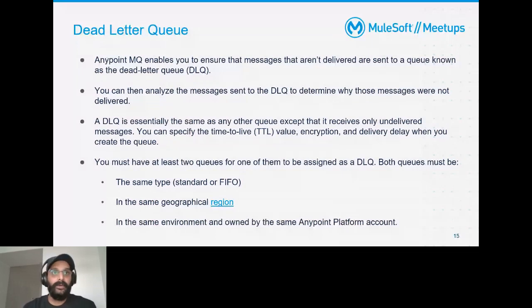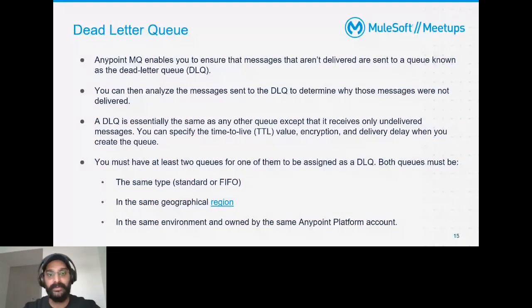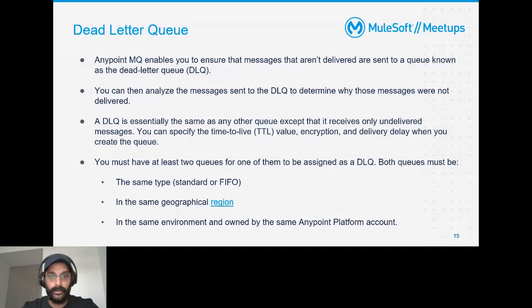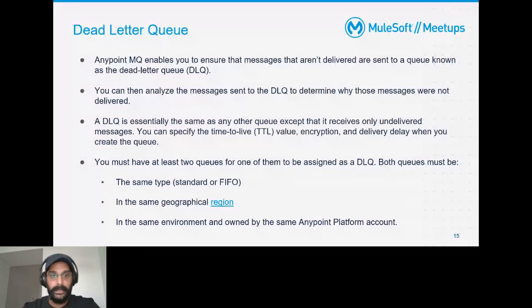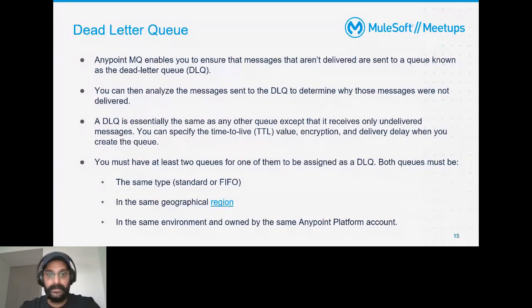There are limitations to DLQs: both queues must be of the same type — if you're using a standard queue, its DLQ must also be a standard queue; if a FIFO queue, the DLQ must also be a FIFO queue. They must also be in the same region and in the same environment, owned by the same Anypoint Platform account.